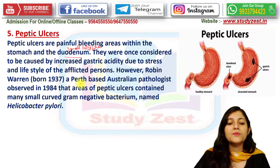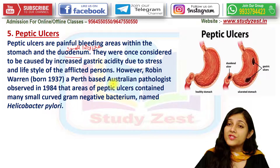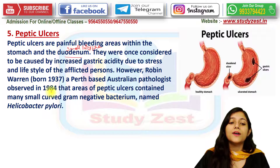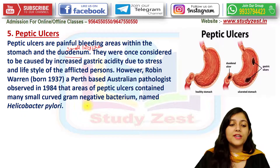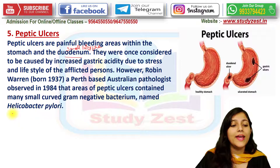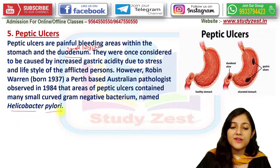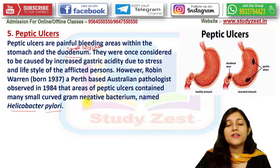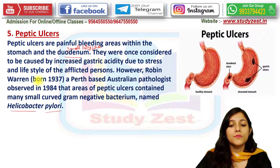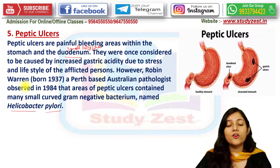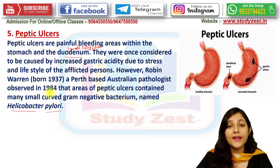However, Robin Warren, a Perth-based Australian pathologist, in the year 1984, observed that areas of peptic ulcers contained many small, curved, gram-negative bacteria, which he named Helicobacter pylori.